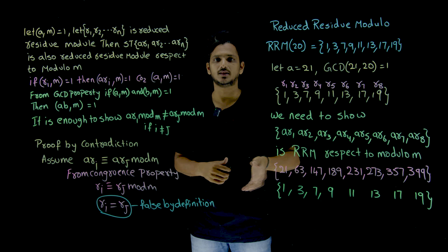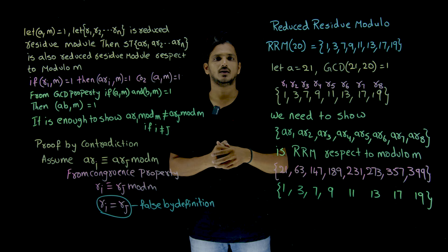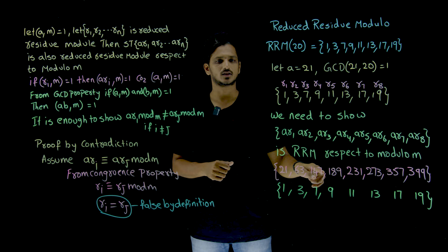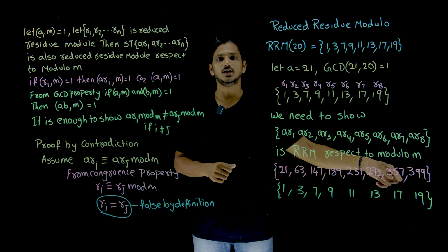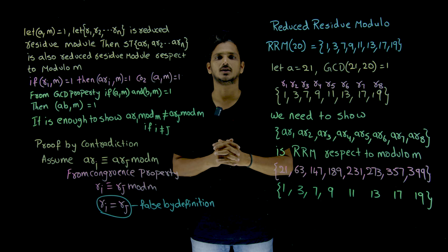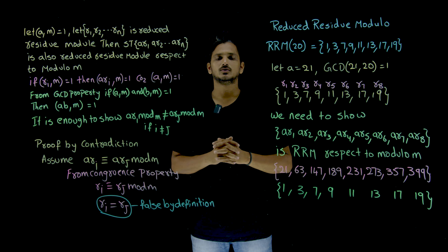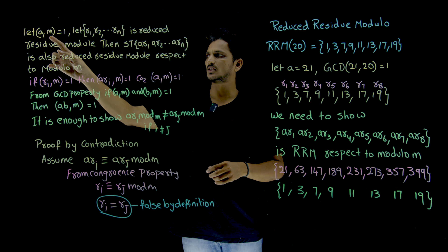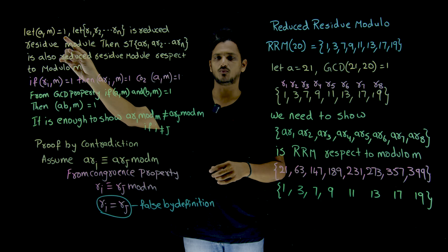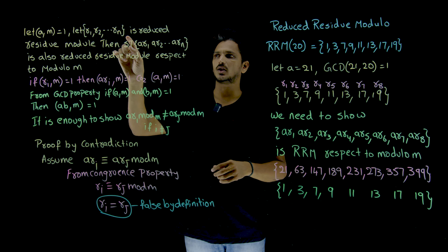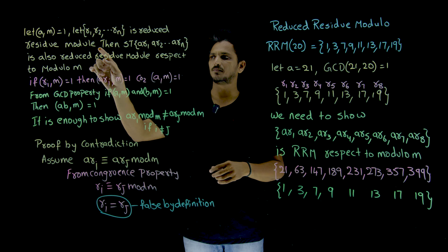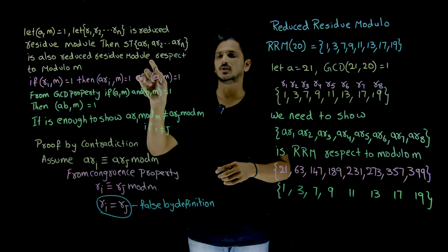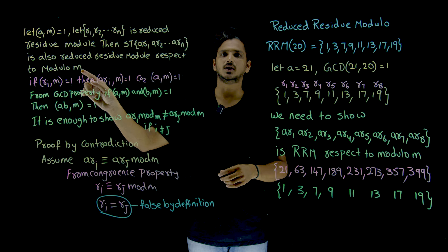This is what we need to show mathematically. If GCD(A, M) = 1, and R1, R2, ..., Rn is the reduced residue modulo M, then show that A·R1, A·R2, ..., A·Rn is also a reduced residue modulo set with respect to modulo M.